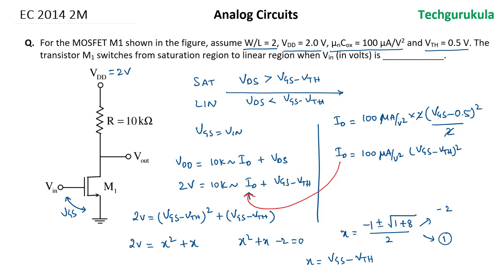In that case we know the VTH value which is given 0.5. Hence VGS, which is also equal to Vᵢₙ, should be 1.5 volts. So the answer would be 1.5.